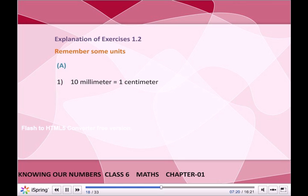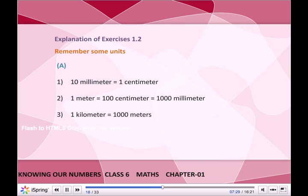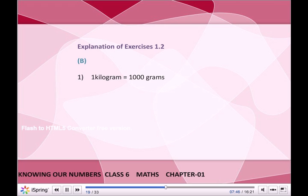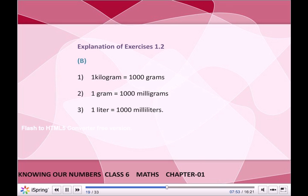Insert commas suitably according to the international system of numeration: A. 84614073 → Answer: 84,614,073. Remember some units: 10 mm = 1 cm; 1 m = 100 cm = 1000 mm; 1 km = 1000 m; 1 km = 1000 × 1000 mm = 10 lakh millimetres; 1 kg = 1000 g; 1 g = 1000 mg; 1 litre = 1000 ml.